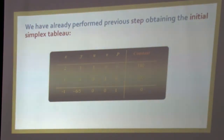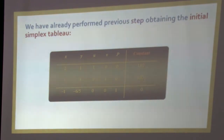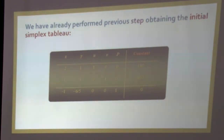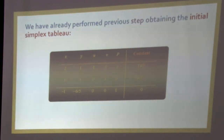The next step is to determine whether the optimal solution has been reached. Check whether all the entries in the last row (objective function row) are positive or not. If all entries are positive, the optimal solution is reached; if any are negative, we must perform a pivot operation. Since there are negative entries in the last row, the initial solution is not optimal, so we perform the pivot operation.